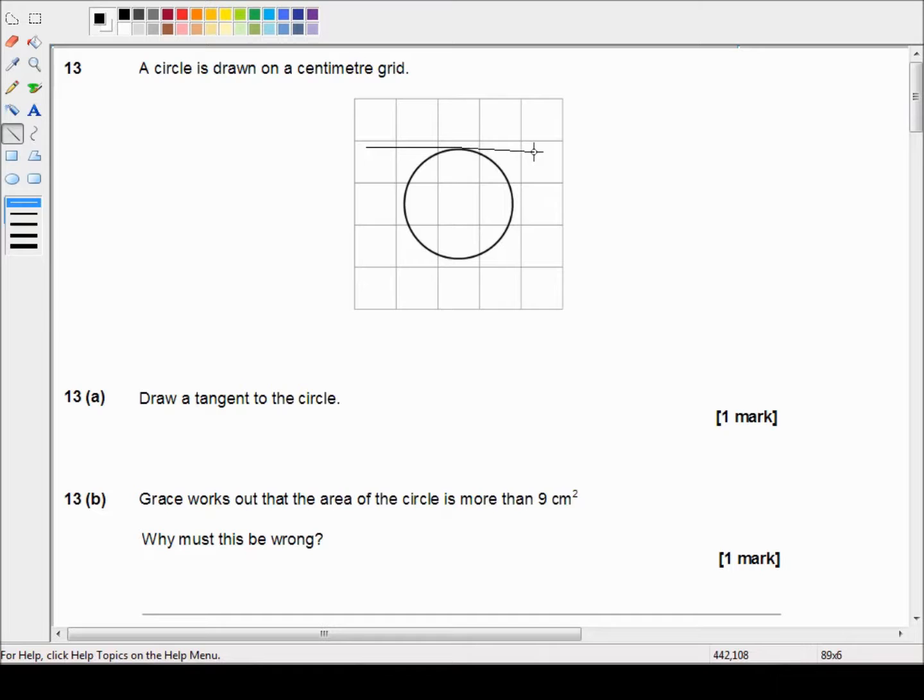So I would use a ruler if I had the choice, and I would just line the ruler up so that I could draw a line that just touches the surface of the circle. And that's all. It does not go through the interior of the circle.